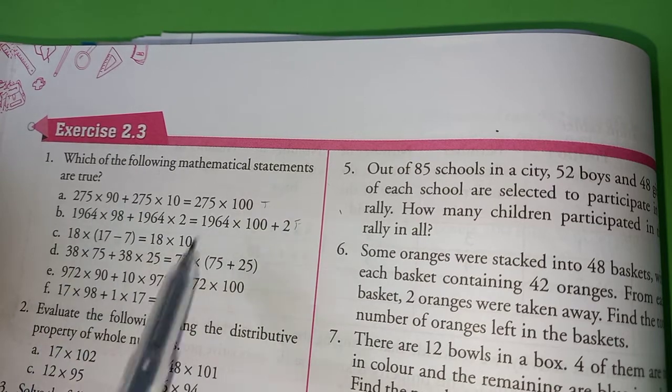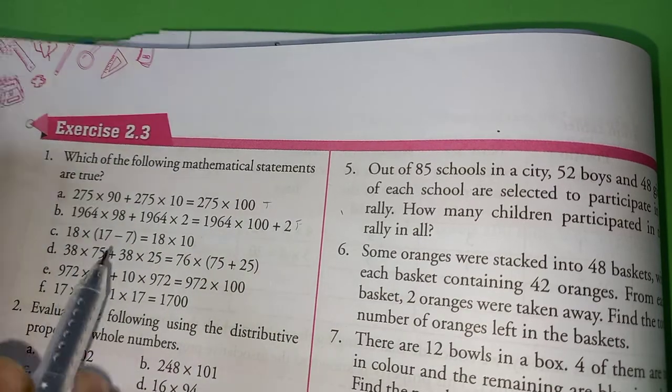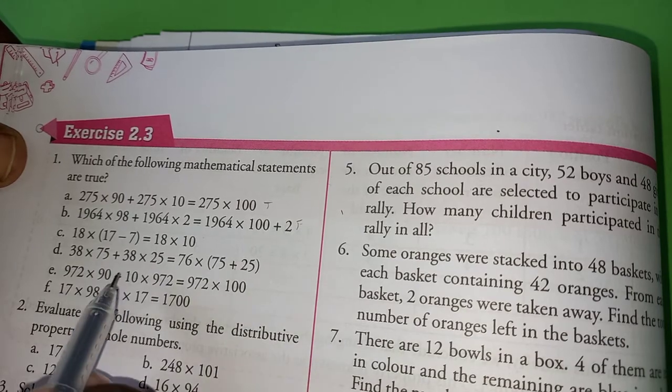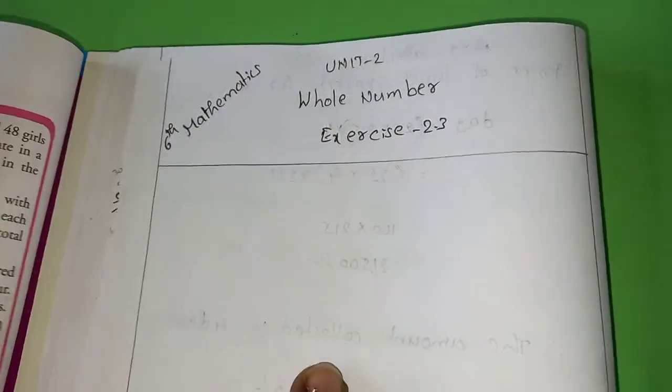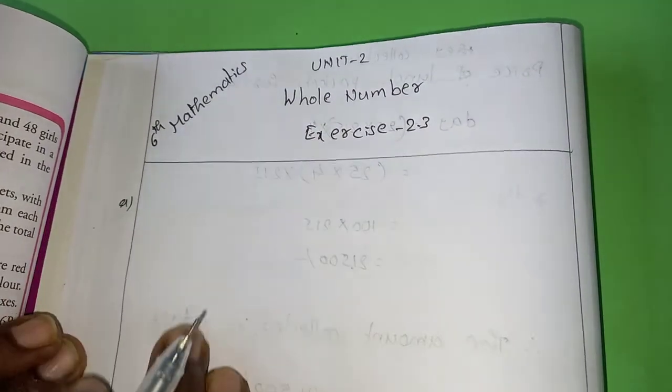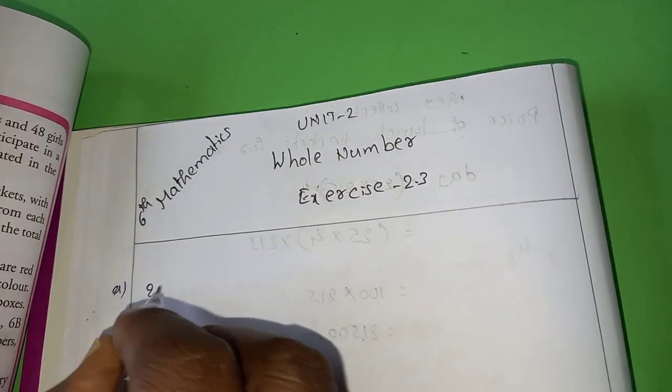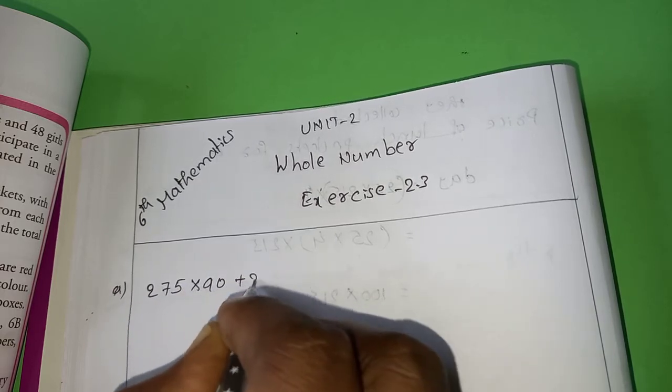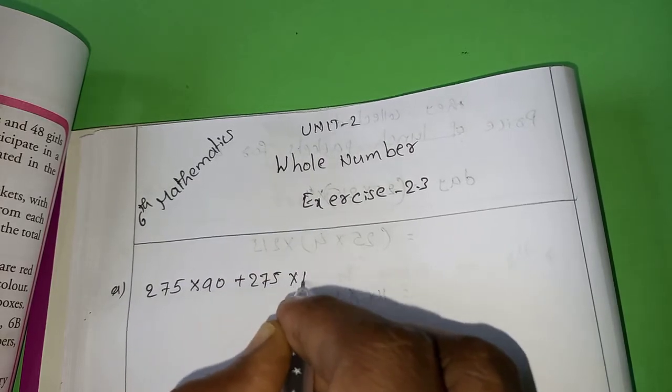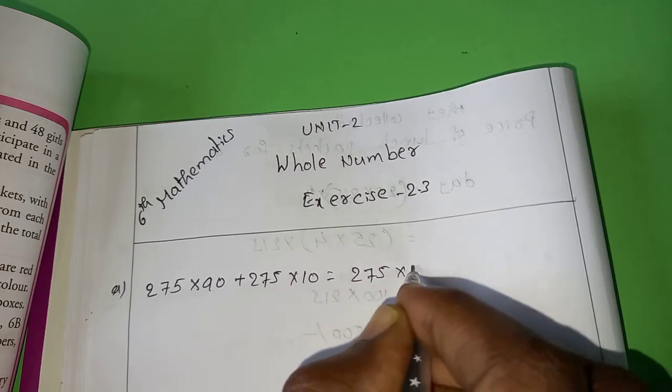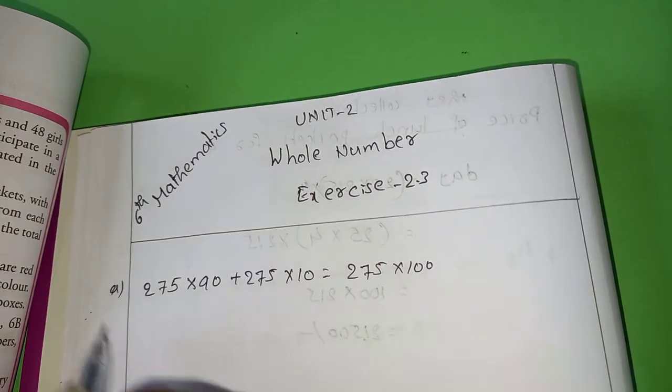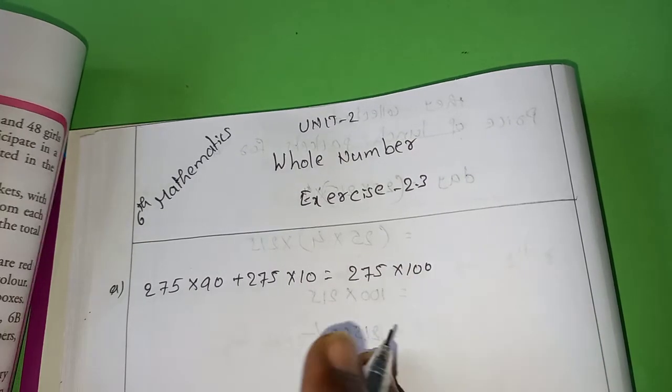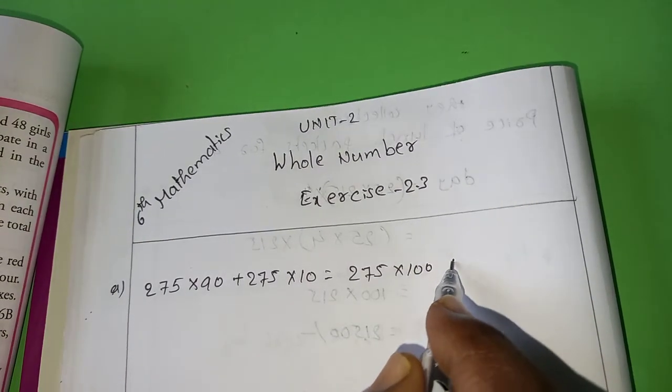We have to write true or false for the following questions. I will explain everything. First one, please copy the complete question. We just have to write true or false. 2.75 into 90 plus 2.75 into 10 equals to 2.75 into 100. You don't need to calculate anything, you just have to write true or false. What is the answer? True.